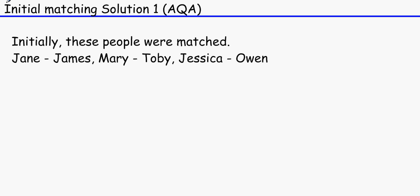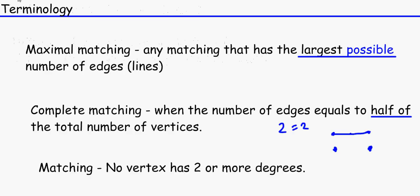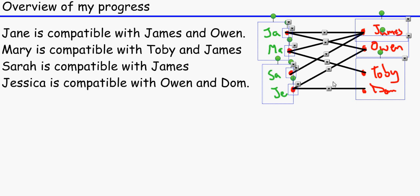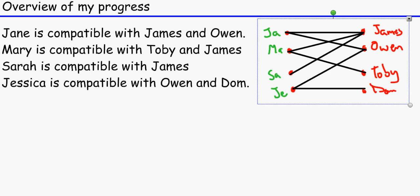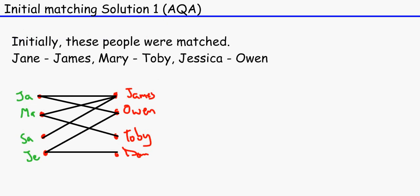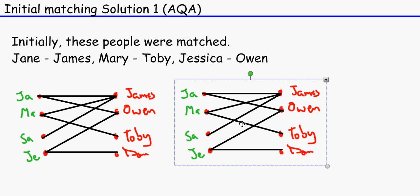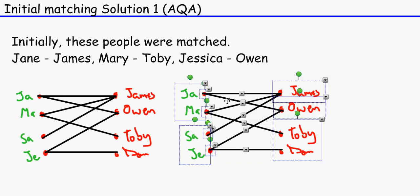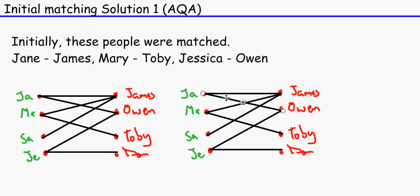Through my outdated knowledge, I had an initial matching that Jane was matched up with James, Mary was matched up with Toby, and Jessica was matched up with Owen. So what we would do is we would have this for reference and then we shall create - this is AQA by the way - we shall create another graph which basically displays the initial matching. So what we would do is Jane is matched up with James, and remember this initial matching only has one node connected to each other. Mary is connected with Toby and Jessica is connected with Owen.